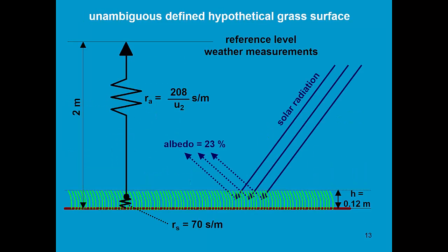Here we see some of the characteristics of the hypothetical grass surface. For example, solar radiation comes in, and the albedo, the part of the solar radiation which is reflected, is by definition 23%, while for grass it might vary between 20 and 25%. The surface resistance is 70 seconds per meter, which is a resistance for a well-watered crop.